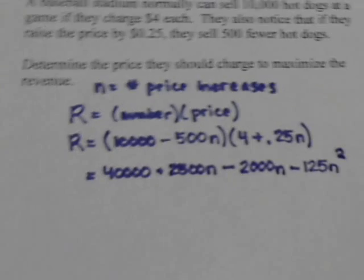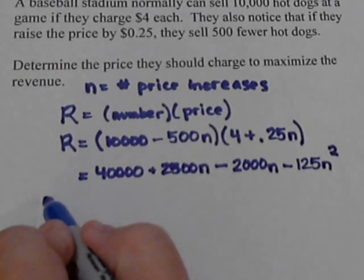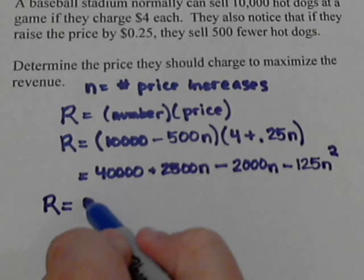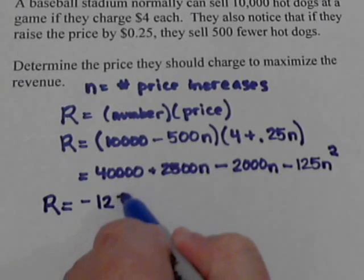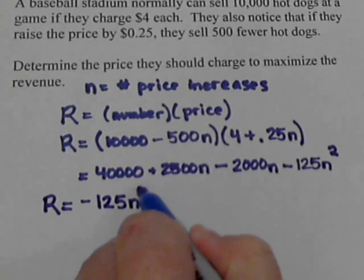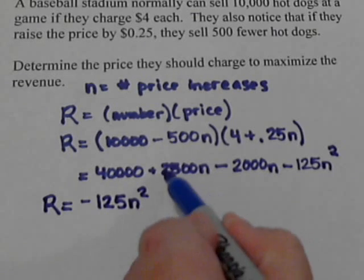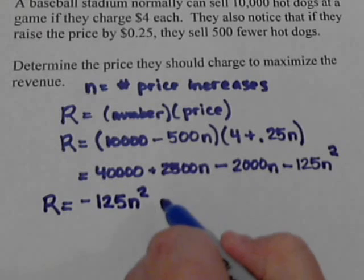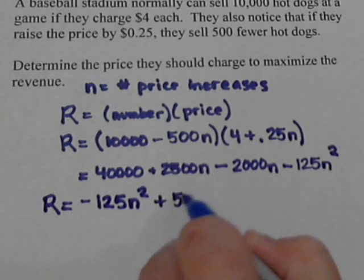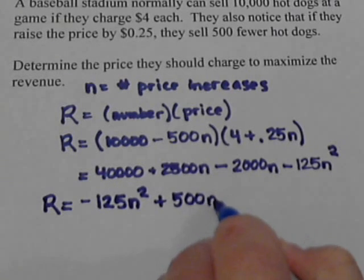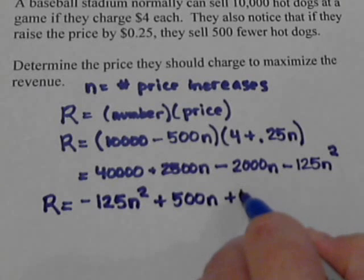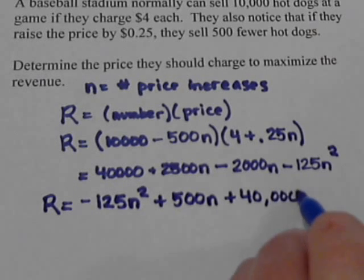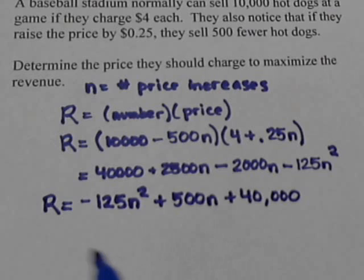Now let's rearrange this and put it in the usual order. So our revenue equation is going to be negative 125N squared. Combining the two middle terms: 2,500 minus 2,000 is 500N. And then plus 40,000.